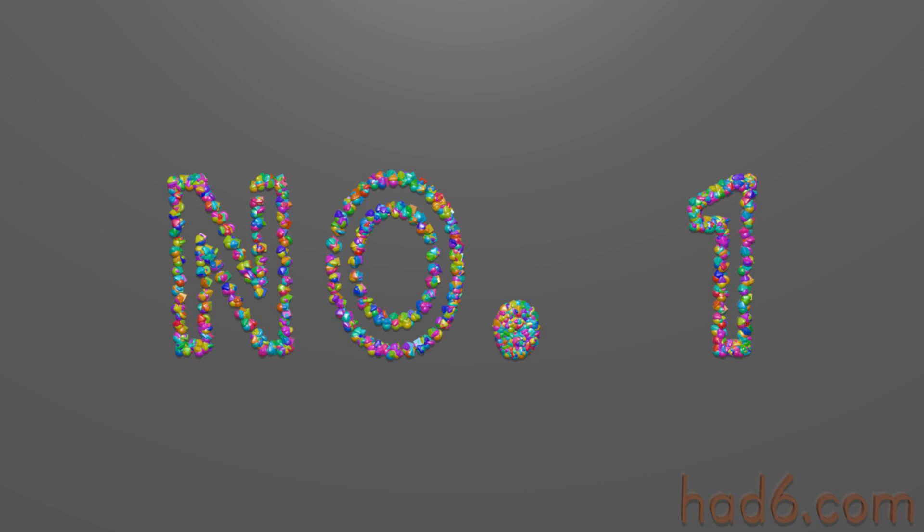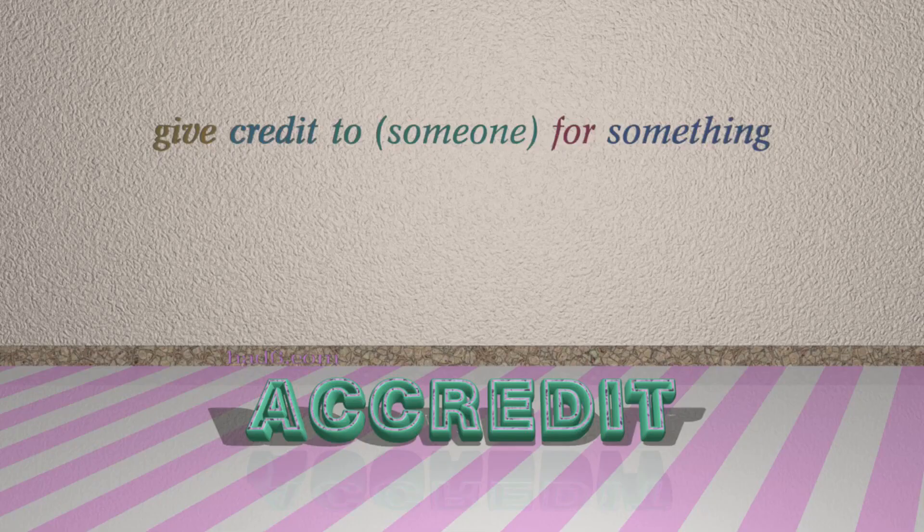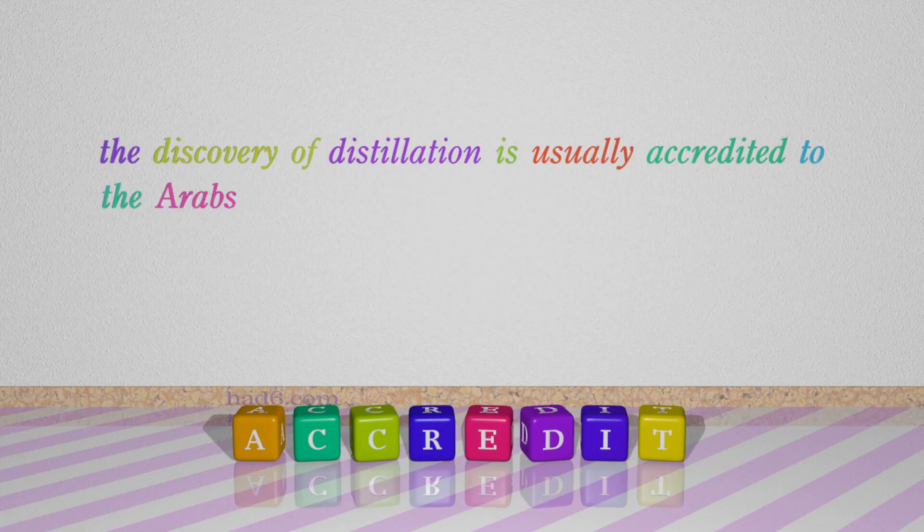Number 1: Accredit. Which means: give credit to someone for something. For example, the discovery of distillation is usually accredited to the Arabs.